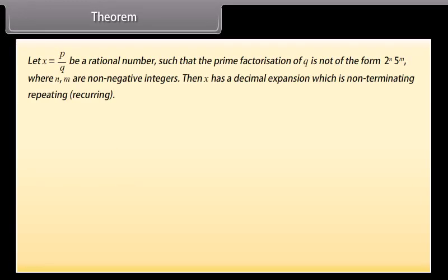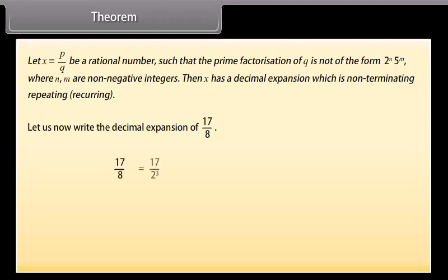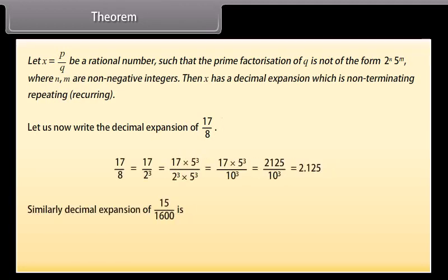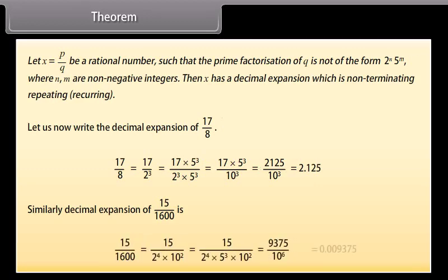Theorem: Let x = P/Q be a rational number such that the prime factorization of Q is not of the form 2ⁿ × 5ᵐ, where n and m are non-negative integers. Then x has a decimal expansion which is non-terminating repeating (recurring). For example, the decimal expansion of 17/8, and similarly the decimal expansion of 15/1600 is 0.009375.